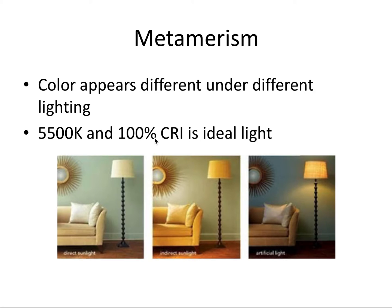CRI refers to the color rendering index, which measures a light's ability to illuminate different colors using a number from 0 to 100%. A 100% color rendering index means you'll get the best color extraction from an object possible. Although perfectly white light is the ideal light source for shade matching, as long as you stay consistent in your light source, you can get accurate results.